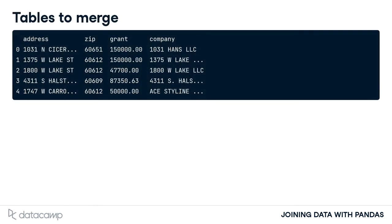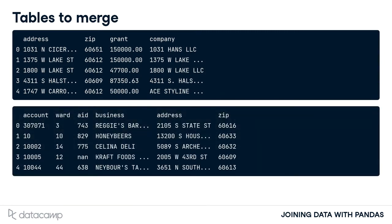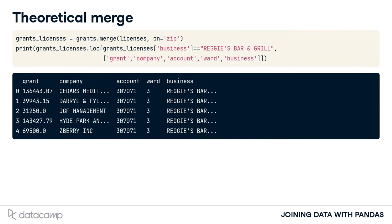To pull all of this information together, let's first connect our grants table to our licenses table. The two tables are related by their company name and location. Let's pause here for a moment. If we merge the two tables using only the zip column, then a 60616 zip of Reggie's bar from the licenses table will be matched to multiple businesses in the grants table with the same zip. Our code sample prints the first few rows and some columns of the merge table. The output of the merge duplicates Reggie's bar for each matching zip in the grants table, which is not what we want.